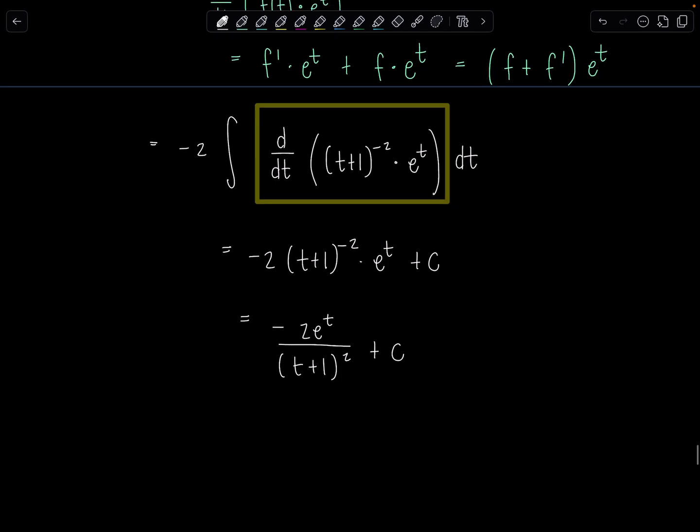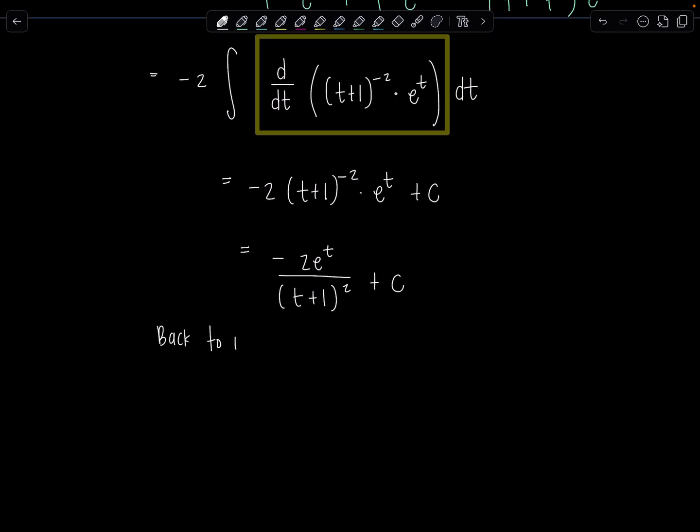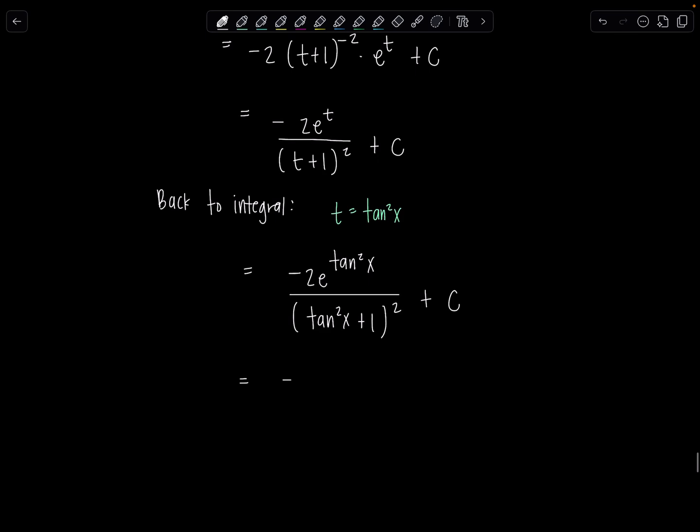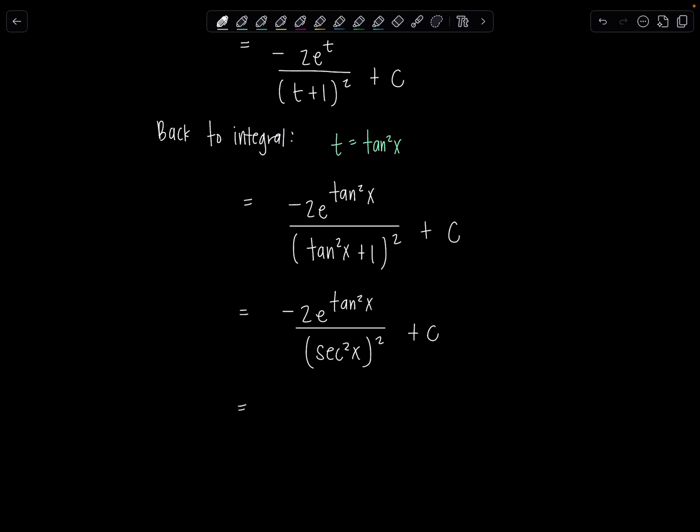Okay, so now let's go back to the original integral. We had made that substitution. Do you remember what it was? It might feel like a lifetime ago. We let t equal tangent squared x. So then now we have negative 2 e to the tan squared x over, this is going to be tan squared x plus 1 squared plus c. Can we clean it up further? Yeah, because tan squared x plus 1, that's secant squared x. So negative 2 e to the tan squared x over secant squared x squared plus c. So then that's secant to the fourth. And then I would just bring it up to the numerator, because, you know, why is it in the denominator? So sad. Negative 2 cosine to the fourth x times e to the tan squared x plus c. And we are done.